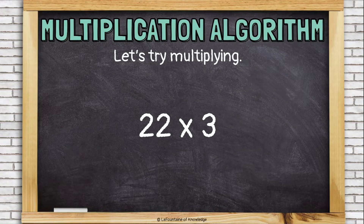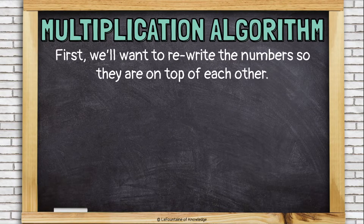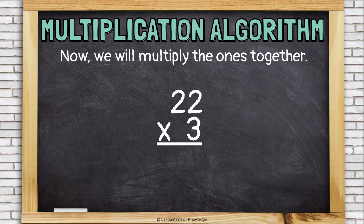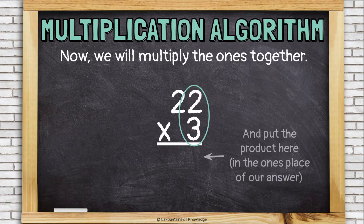Let's try multiplying 22 times 3 using the standard algorithm for multiplication. First, we'll want to rewrite the numbers so that they're on top of each other like this. Notice how the numbers are lined up with the ones under the ones. Now, we'll multiply the ones together. So that's 3 times 2, which is 6. And we're going to put the product 6, the answer, down here in the ones place of our answer like this.